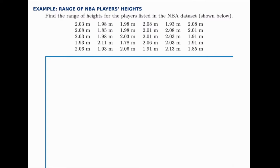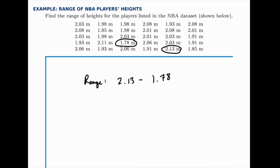If you scan through, you should be able to pick out that the lowest number is 1.78. 1.78 meters is the shortest player in the sample that we listed, and the tallest player is 2.13 meters. So the range is just the difference between those two. If we take 2.13 minus 1.78, the range is 0.35 meters.